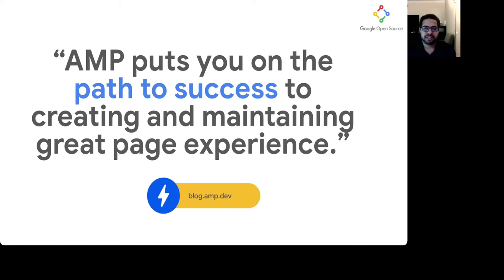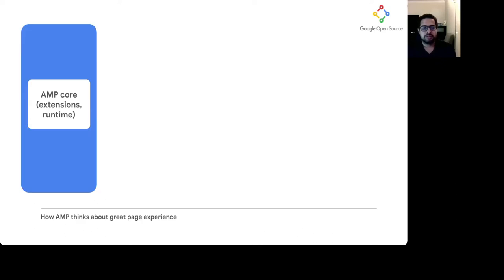AMP puts developers on a path to success, not just by creating great pages, but also helping you maintain that great page experience over a longer period of time. The AMP runtime provides developers with the constraints needed to create great performing pages, and the use of AMP cache further improves this because it allows your pages to be experienced by users near instantly. However, like many other frameworks, AMP can't implement all web development best practices into the runtime. This is why, in the run-up to the page experience ranking launch, we've been encouraging developers to look at your AMP pages to make sure they are performing very well on your domain. So the first step in starting to implement great page experience for your site starts at the AMP core.